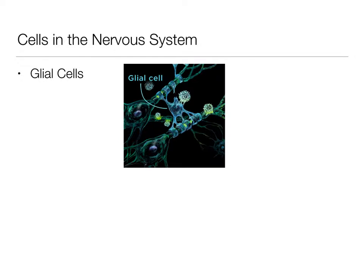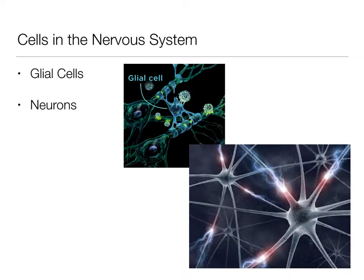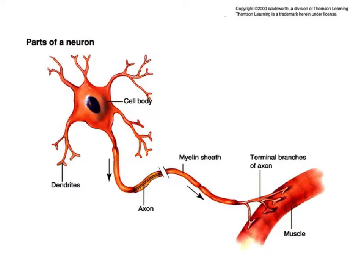It's not a psychology class without a discussion about the cells in the nervous system. We have two kinds of main cells in our nervous system: we have the glial cells and the neurons. And we'll talk about both of those.